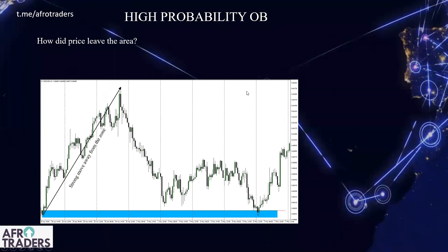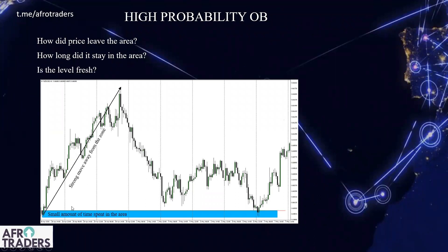A strong move away from the zone is key. This order block pushed price very strongly away from this particular zone. When price comes back there, we know it is a high-probability one. Also consider how long price stayed in that area. If too much time was spent there, you should have second thoughts. But if price left quickly and didn't spend too much time there, it's going to be a high-probability one — a small amount of time spent in the area.